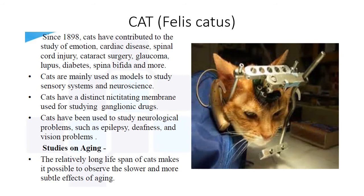Cat — the scientific name is Felis catus. Since 1898, cats have contributed to the study of emotion, cardiac disease, spinal cord injury, cataract surgery, glaucoma, lupus, and diabetes. Cats are mainly used as a model to study sensory systems and neuroscience. Cats have a distinct nictitating membrane used for studying ganglionic drugs and have been used to study neurological problems such as epilepsy, deafness, and vision problems. Their relatively long lifespan makes it possible to observe the slower effects of aging.